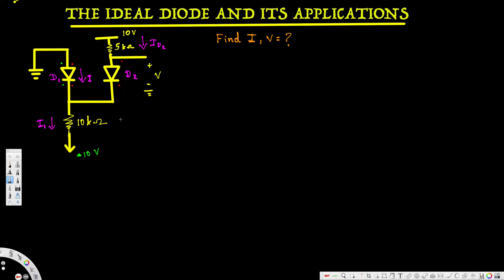In this video we are going to see an example of a diode circuit. Here we have a diode circuit and the question is asking us to find out this current i and this voltage V. We can use two different methods: the open circuit method or the short circuit method.